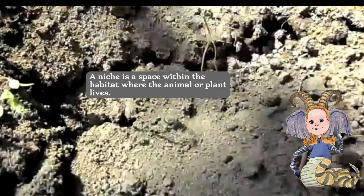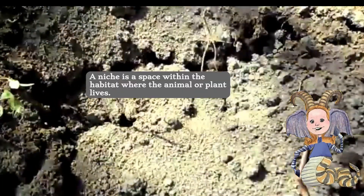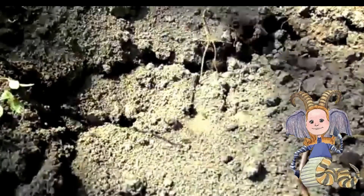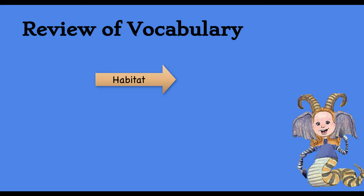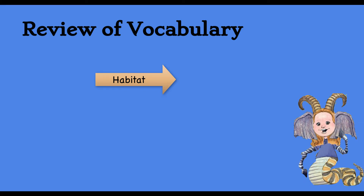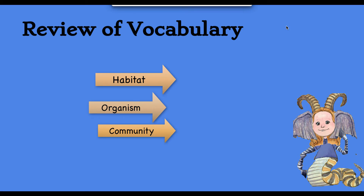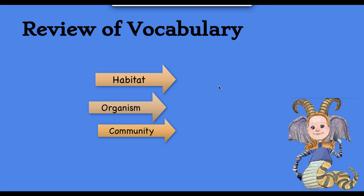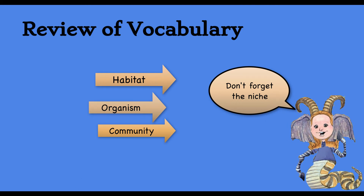Do you think these ants' basic needs of food, water, oxygen, and shelter are being met? It looks like these ants are thriving. Let's recap: a habitat is a place where an animal or plant lives. An organism is a plant or animal. A community is where organisms share an address, and a niche is a small part of the community.